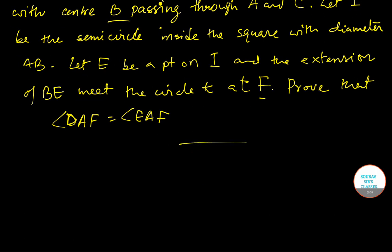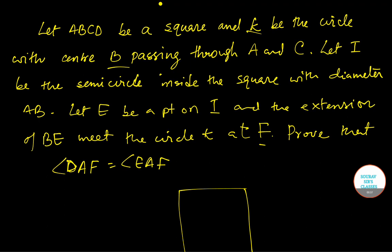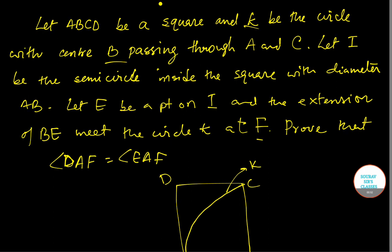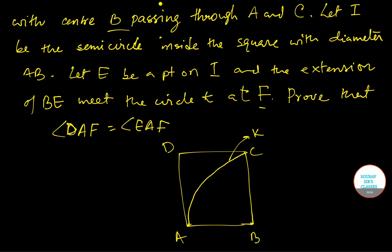We have square ABCD. K is a circle with center B passing through A and C, so B is the center and the circle passes through A and C — this is circle K. Taking diameter AB, we draw a semicircle I inside the square. E is a point on I, and the extension of BE meets circle K at point F.